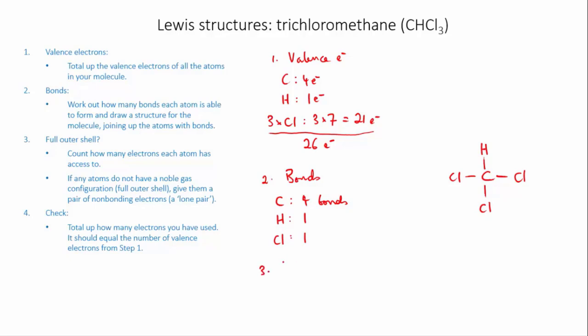Okay, now I check for the full outer shell. Carbon forms 4 bonds, each bond gives it 2 electrons, so it's got 8, so it's fine. Hydrogen has formed 1 bond, which gives it 2 electrons. It's also fine.